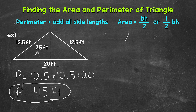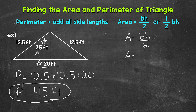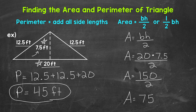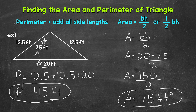Let's move on to area. Area equals base times height divided by 2. We're going to use 20 feet for the base and 7.5 feet for the corresponding height. So area equals 20 times 7.5 divided by 2. 20 times 7.5 gives us 150, and 150 divided by 2 gives us an area of 75 square feet. So for this triangle, we have a perimeter of 45 feet and an area of 75 square feet.